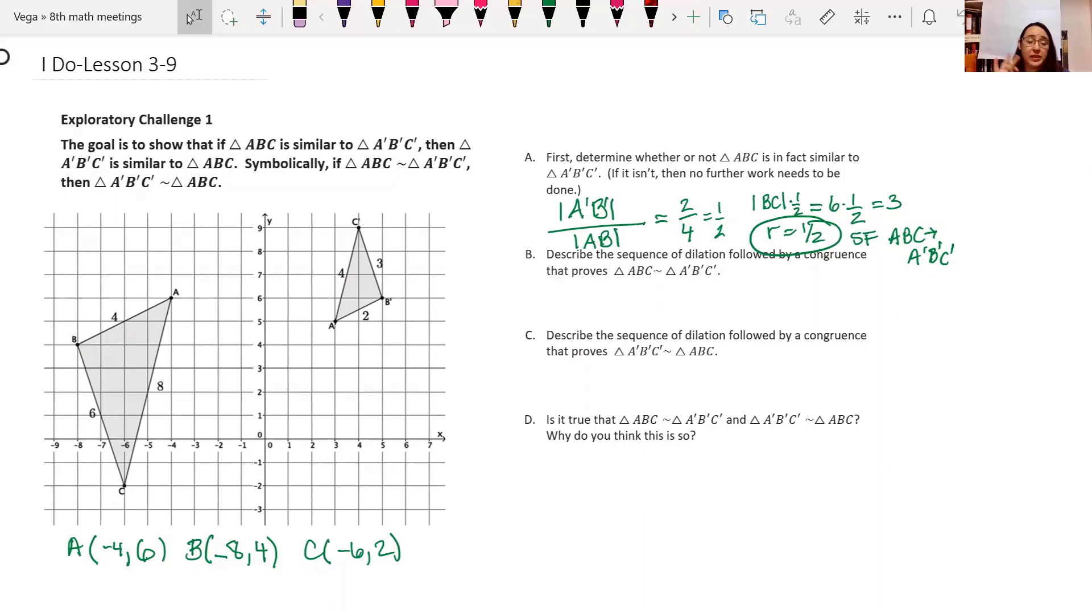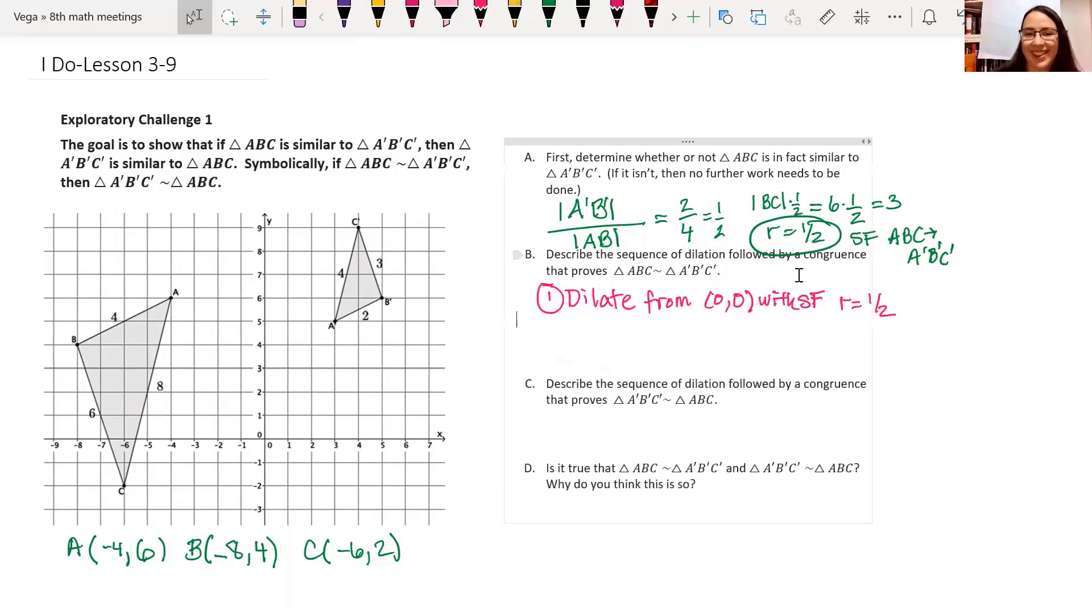We determine the scale factor between the lengths of sides ABC and A prime, B prime, C prime. So my first step, I'm going to write this right under question B. We'll dilate from the origin with scale factor R equals one half. And let's go ahead and show that new triangle now here on the left. Each coordinate, I'm going to multiply by one half. Do this on your own. Great. I've shown the dilation here complete with the lines through the origin that remind us when we dilate, we slide points along the rays.